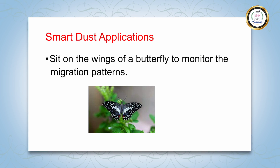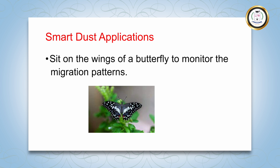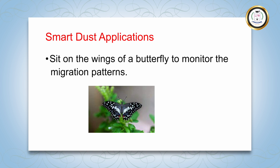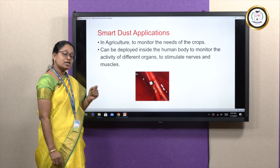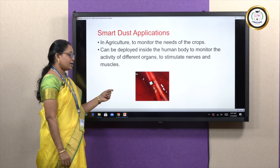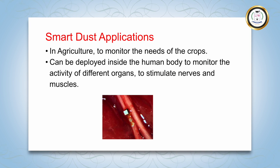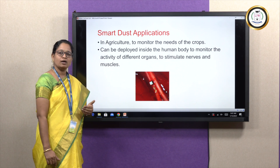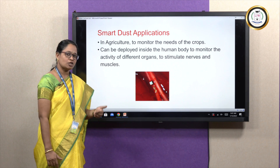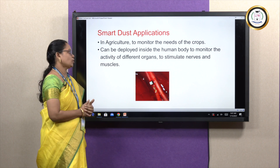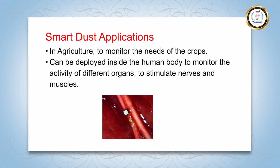SmartDust can be sprinkled on the wings of a butterfly to monitor the migration patterns of butterflies. SmartDust also finds great application in agriculture. It is used to monitor the needs of crops continuously, which helps determine when to water the crops and when to do pest control, thus protecting crops from diseases.